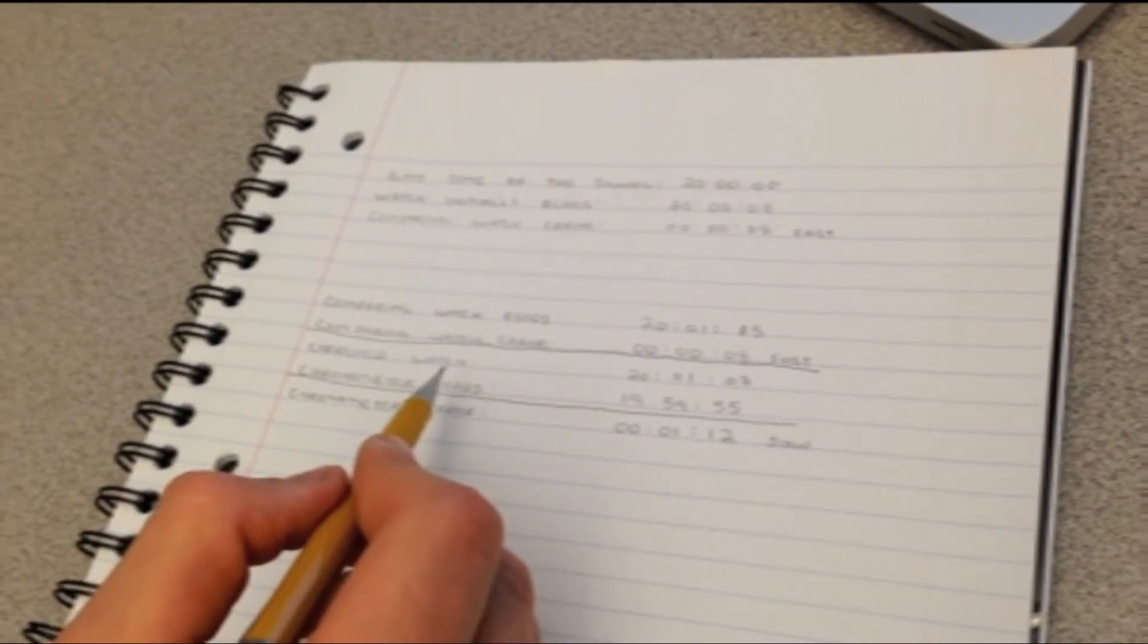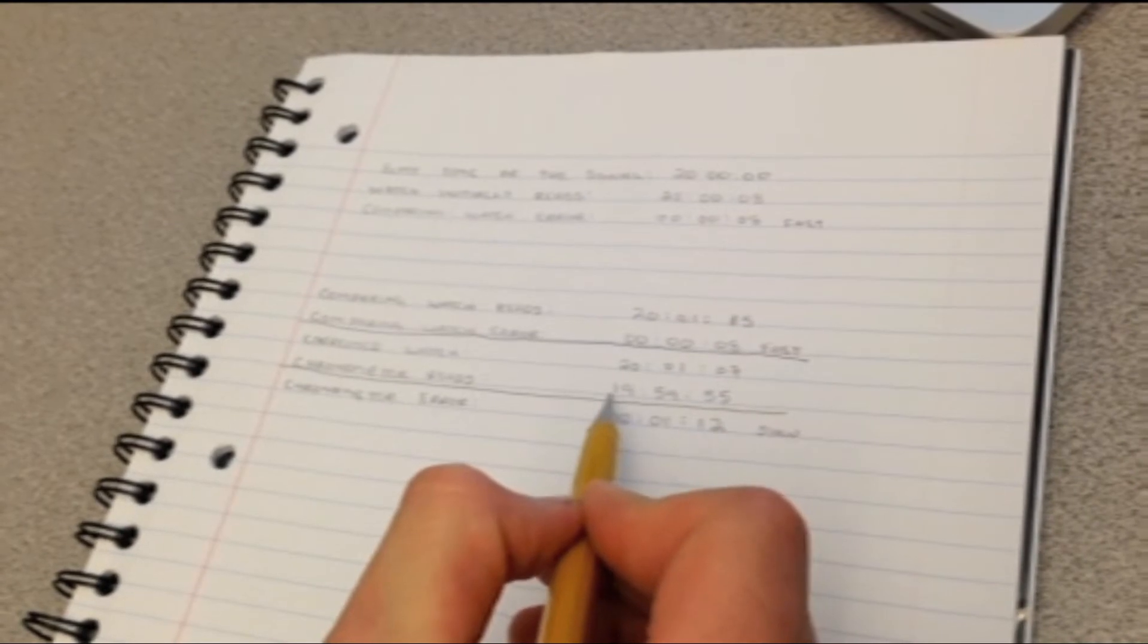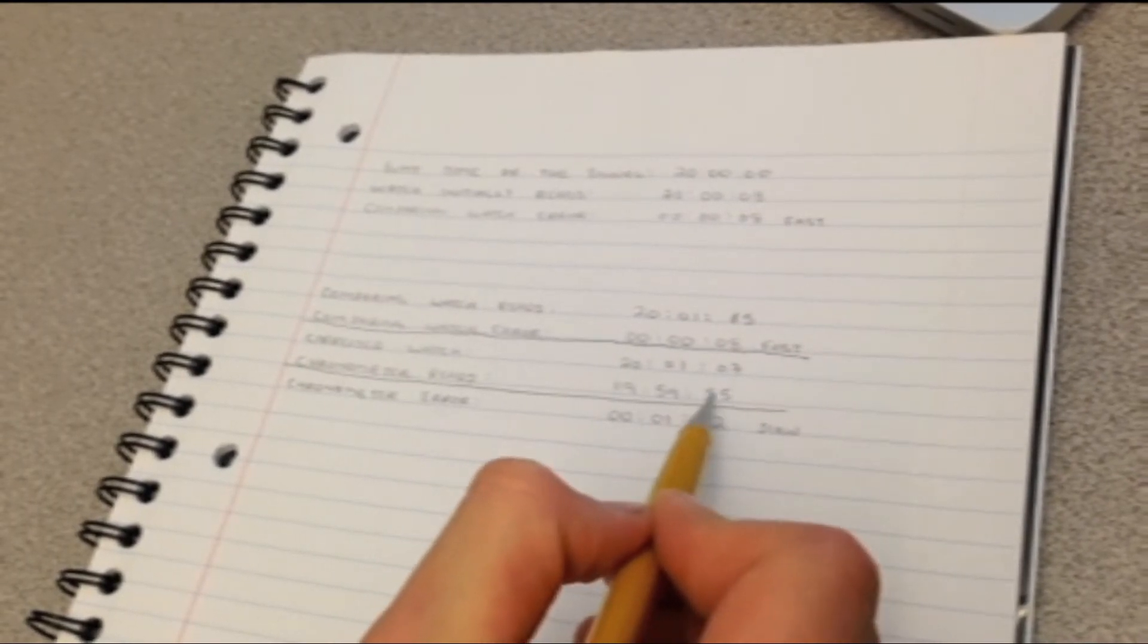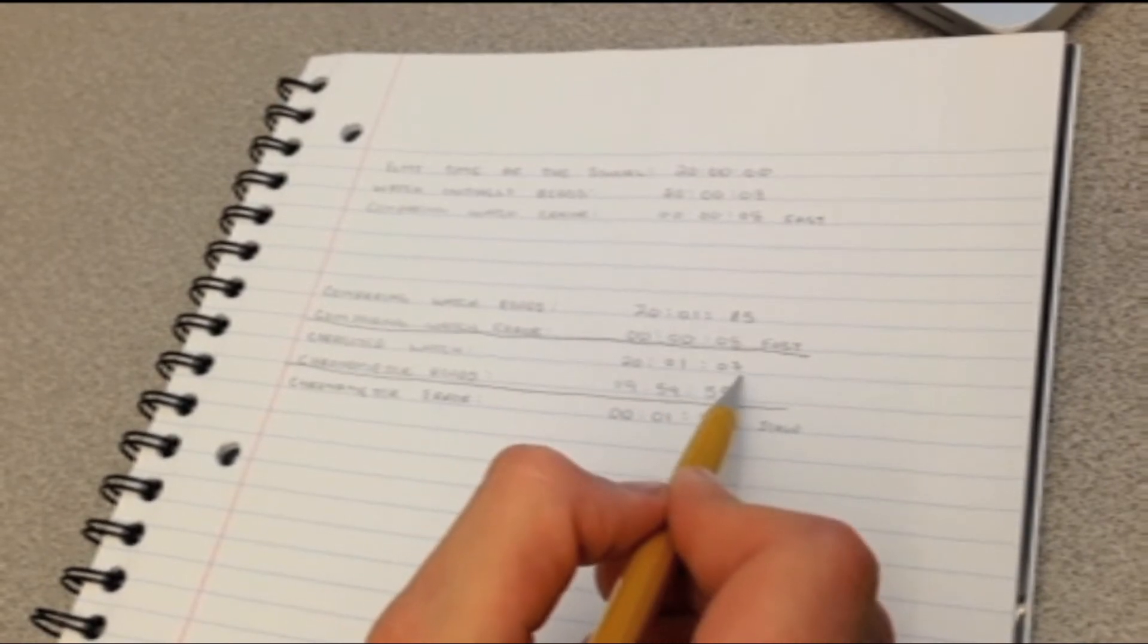Once you have found your corrected watch time, you want to compare it to what your chronometer reads. Your chronometer reads 19-hundred, 59 minutes, 55 seconds. Corrected watch time is 20, 01, 07.